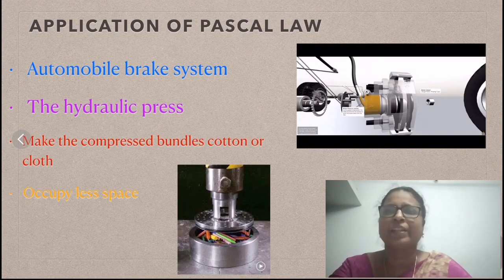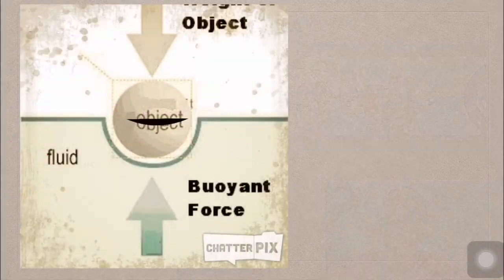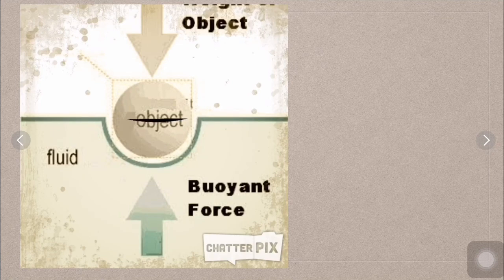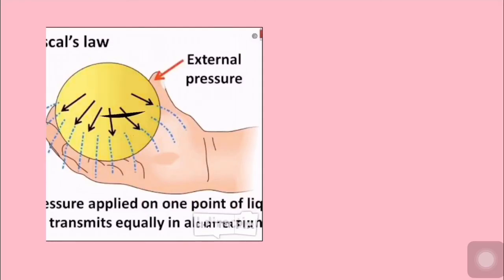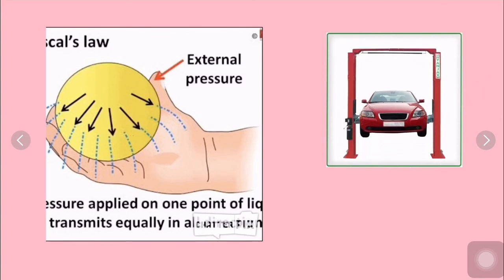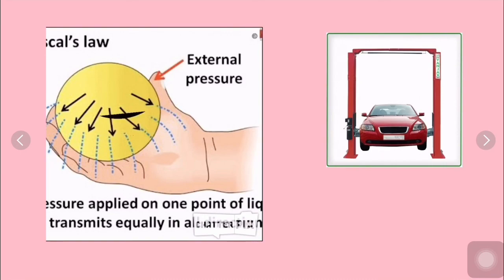Do you understand children? Let's have a recap. The upward force is exerted by the water on the floating or submerged body. Upward force decides whether the object will float or sink. The pressure exerted by a liquid on the base of the container depends upon the height of the liquid column. We learned Pascal's Law: the pressure applied at any point of a liquid at rest in a closed system is distributed equally through all regions of the liquid. Its applications include the automobile service station and the automobile brake system.